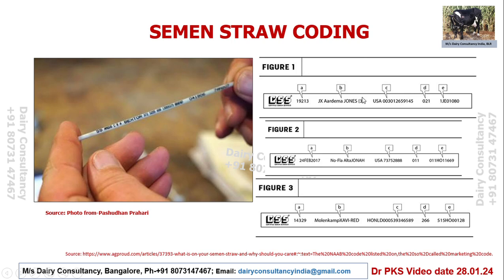Foreign countries like America also use similar markings on semen straws, and India uses the same kind of system. You must collect the empty semen straw from the inseminator so you know what kind of female calf you are going to get.